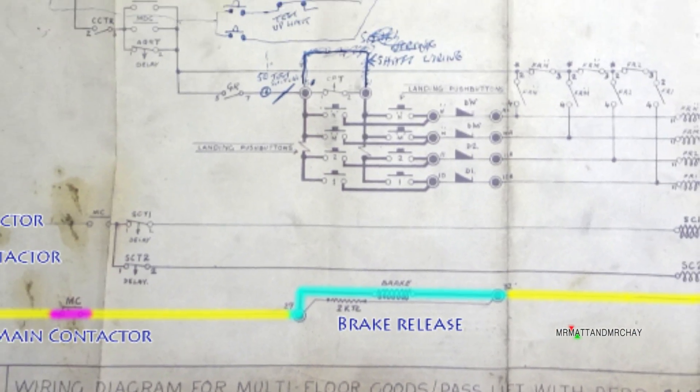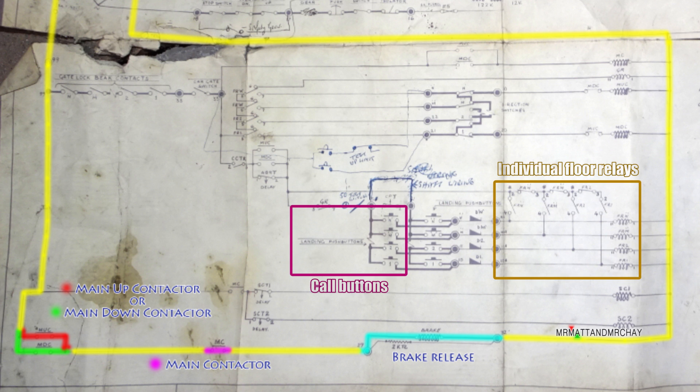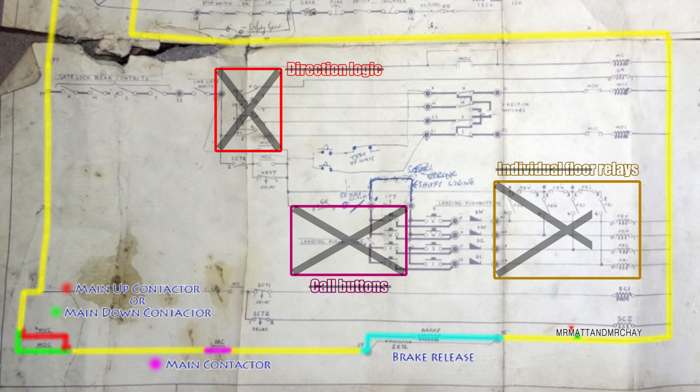As I explained in the previous video, the majority of this diagram is for a different lift. There are no call buttons or direction logic. If you press the up button, it goes up. If you press the down button, it goes down. It's as simple as that.